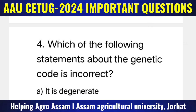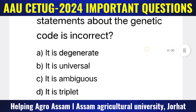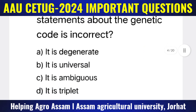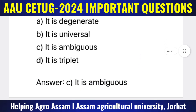Question 4: Which of the following statements about the genetic code is incorrect? Options: (A) It is degenerate, (B) It is universal, (C) It is ambiguous, (D) It is triplet. The correct answer is option C — it is ambiguous.